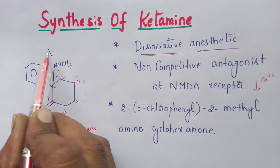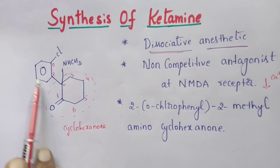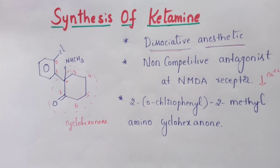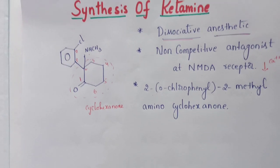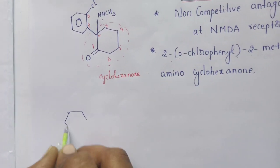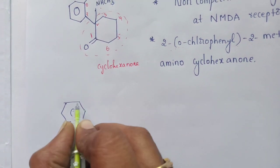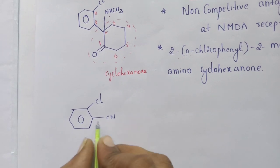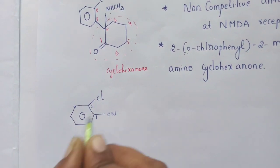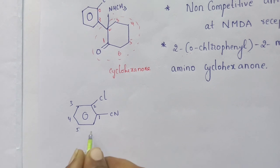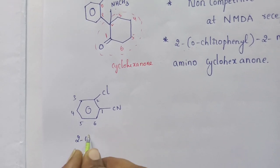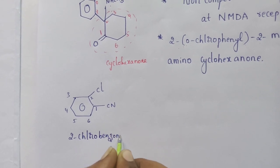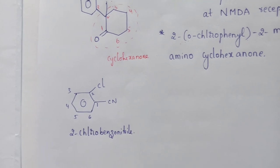Coming to the synthesis of ketamine: the first starting material we take is based on benzene — a chlorobenzene with a nitrile carbon. The name of this molecule, with positions one through six, is 2-chlorobenzonitrile. This is the first starting material.